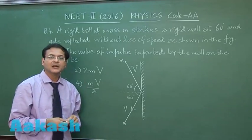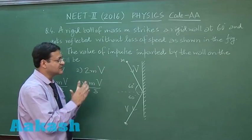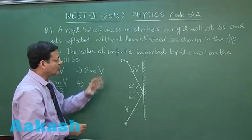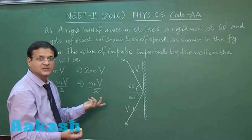You have to find out the value of impulse imparted by the wall on the ball. If you consider Newton's third law, it is an action-reaction pair. So whatever impulse is imparted on the wall, the same is on the ball. Now you try to see what is the change in momentum of the ball.